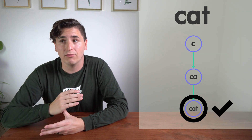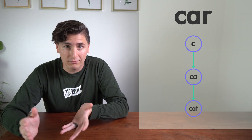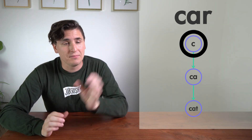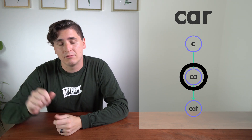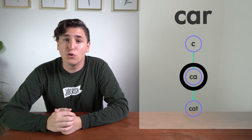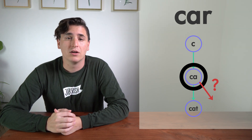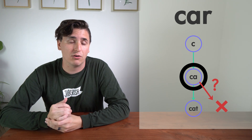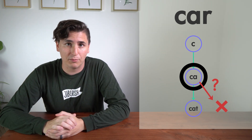Let's look at a search for a word that is not in the library — 'car'. We start at 'c', work our way to 'ca', but now there is no pointer to any node called 'car'. So we fall out of the tree and our search is a failure — that word does not exist in our library.